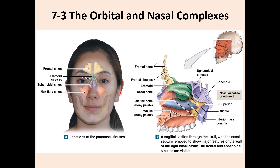Now looking at the lateral wall of the nasal cavity — as opposed to the midsagittal view. The lateral wall is made by the ethmoid bone, which forms the superior nasal concha and the middle nasal concha. The inferior nasal concha is a separate bone entirely. So there are three nasal conchae on each side, for a total of six nasal conchae overall.